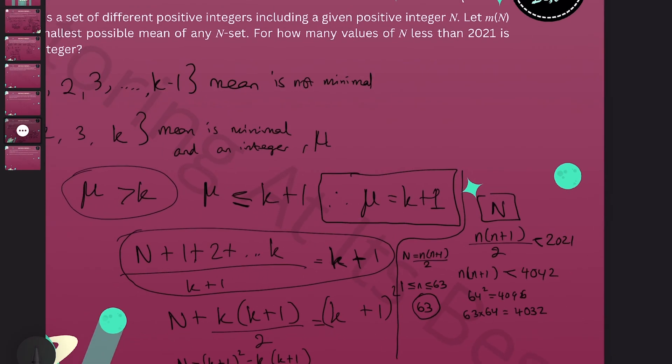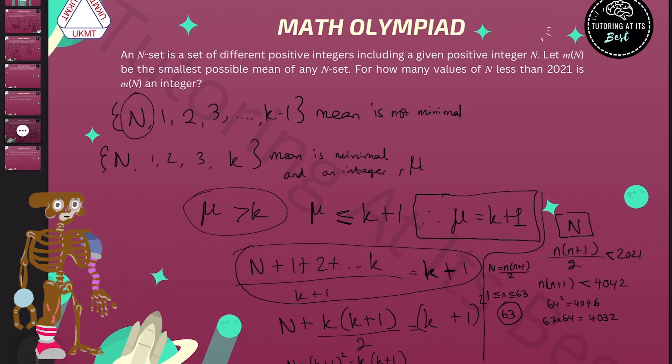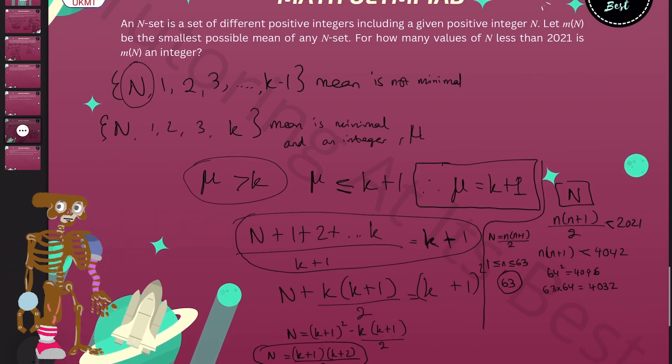Marvelous. I hope that question was clear. I hope you can see how I've taken a specific approach to see where the mean is not minimal, to then when it is minimal, and then finding those values with the triangular number.